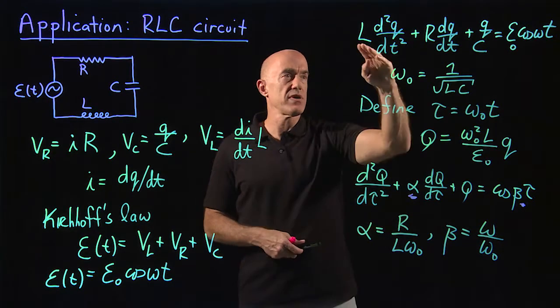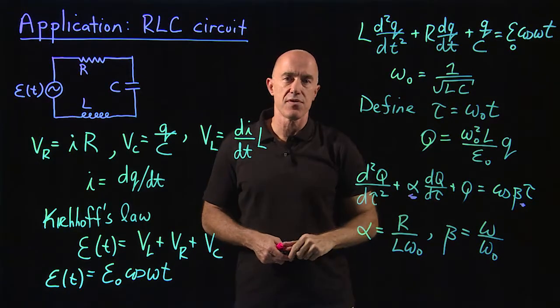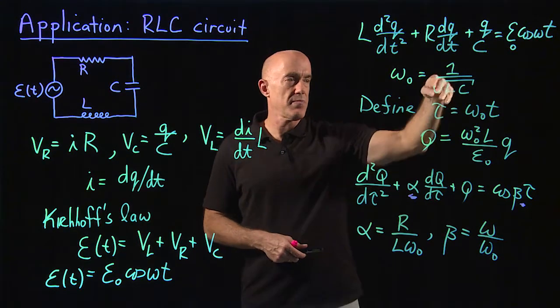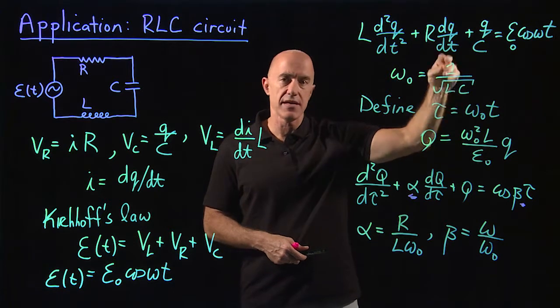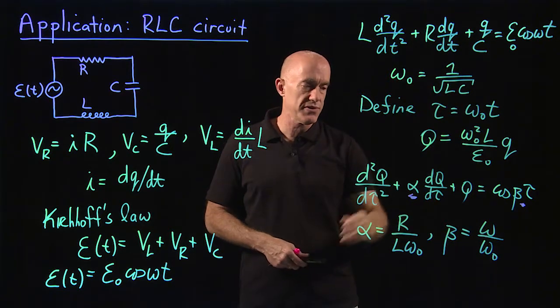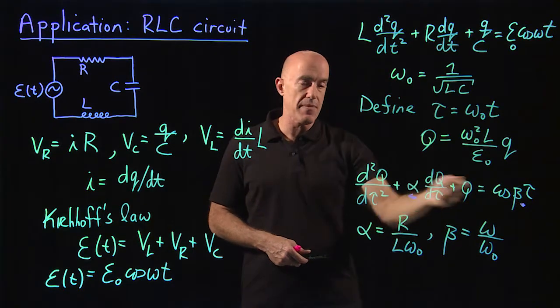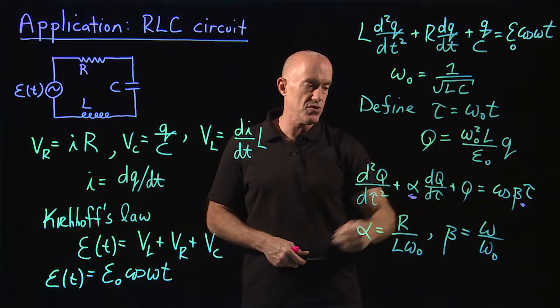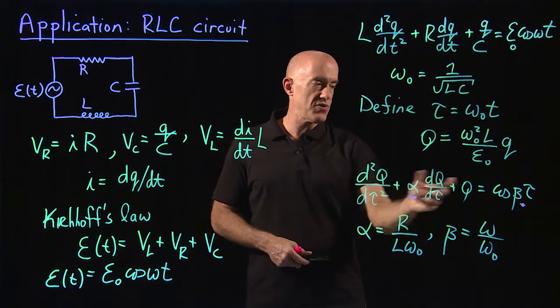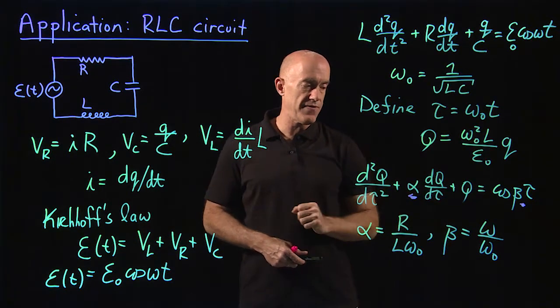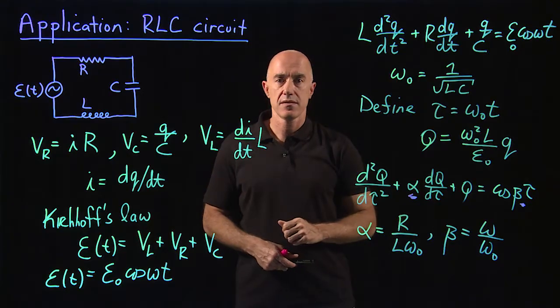So we went from a full dimensional equation for the LRC circuit. By defining, redefining dimensionless variables, we end up with an equation that no longer has dimensions. Each term is unitless. And we end up with two parameters, α and β.